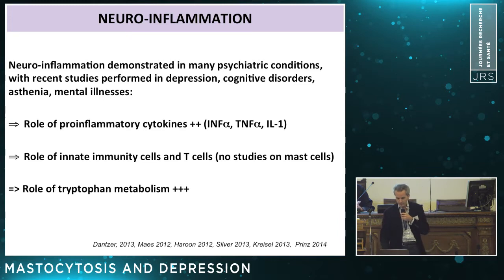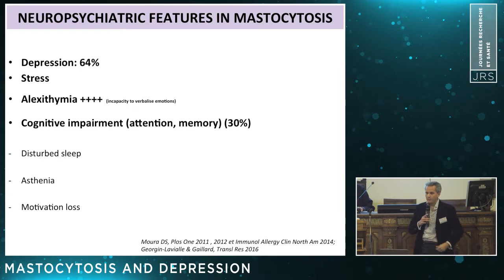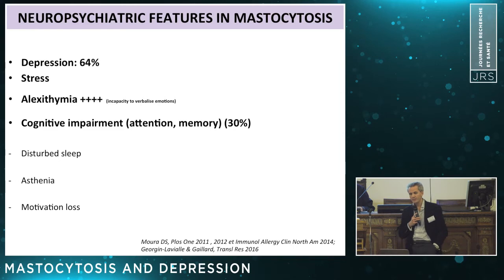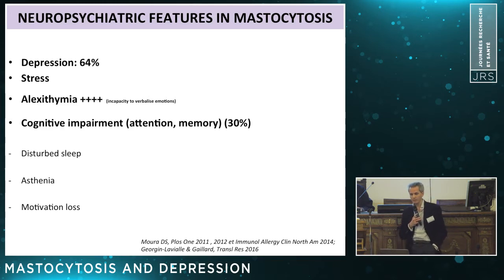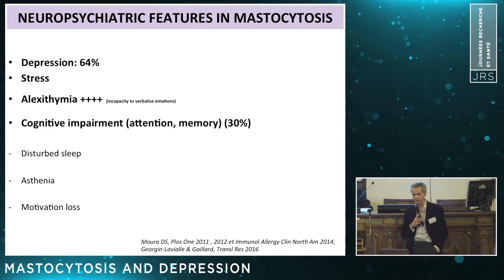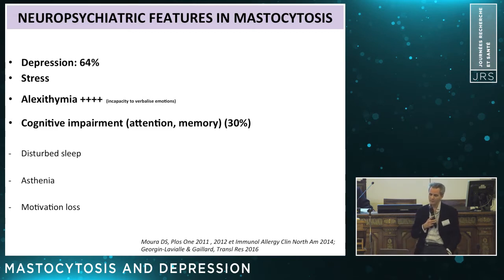What about the neuropsychiatric features in indolent forms of mastocytosis? It's mainly depression, with a high prevalence — about two-thirds of patients. Also stress, alexithymia as frequently seen in inflammation-related depression, cognitive impairment, attention impairment, memory impairment, disturbed sleep, asthenia, and motivation loss — as in other conditions with inflammation.